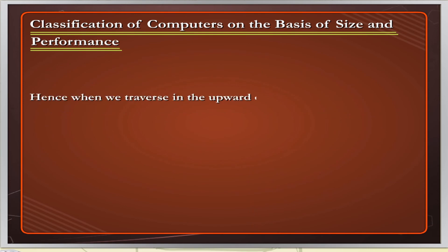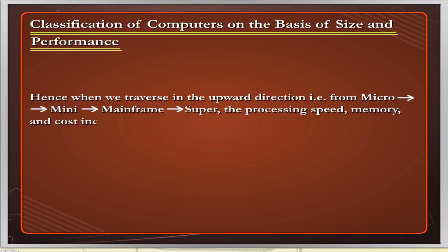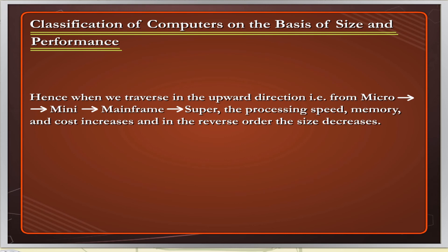When we traverse upward from micro to mini to mainframe to super, the processing speed, memory and cost increase. In the reverse order, the size decreases.